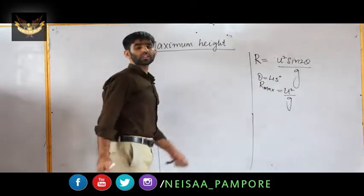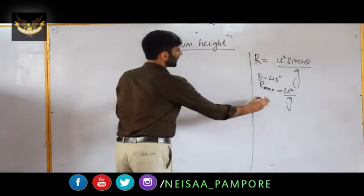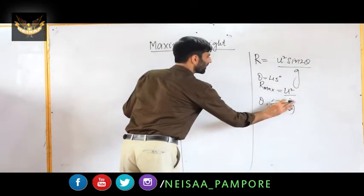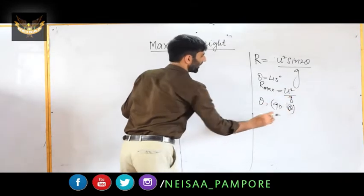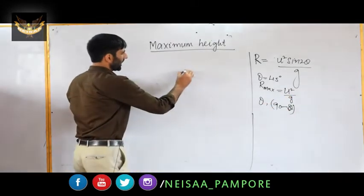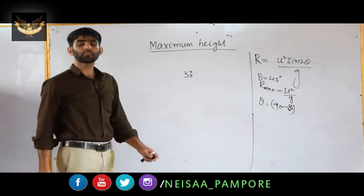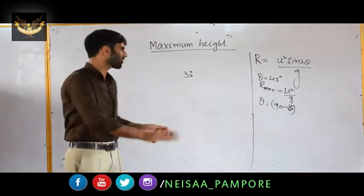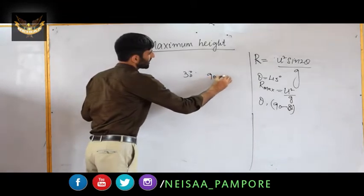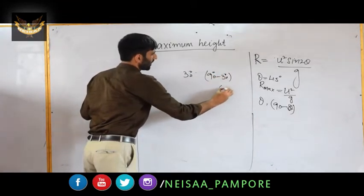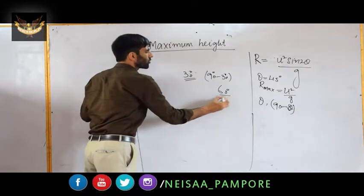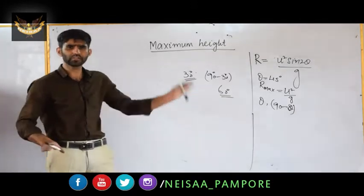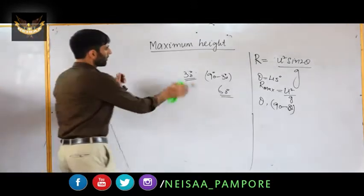For example, if I project a projectile at an angle of 30°, and then project the same projectile with the same initial velocity at 90° minus 30°, which is 60°, the range at 30° and the range at 60° are the same. Let us prove this. It is very simple.